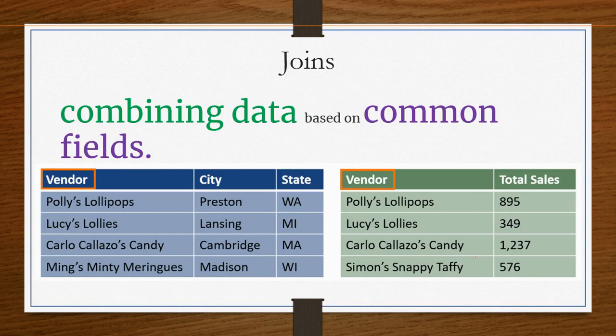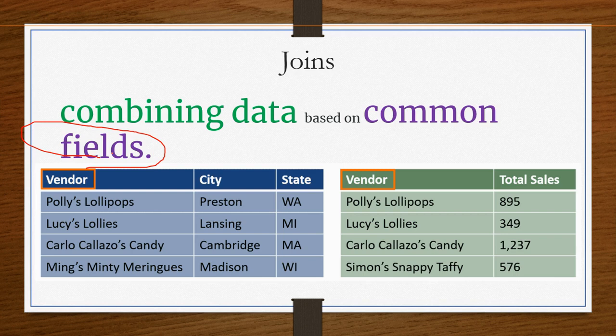Now let us understand join. If you have a common key field in two or more tables, you can perform a join. Join is about combining data based on common fields. Both tables should have a common field — it is good if you have a primary key and foreign key connectivity, but even if there is just a common key, you can perform the join.